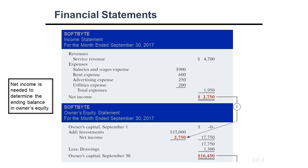We have a net income of $2,750. In the owner's equity statement, we start with the capital at the beginning of the period, add any new investment, add the net income of $2,750, then deduct drawings — all withdrawals the owner took from the company for personal use — and we arrive at the new owner's capital at the end of the period.